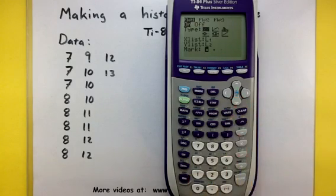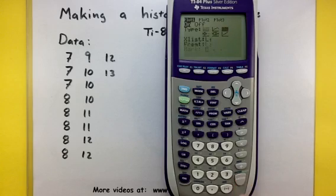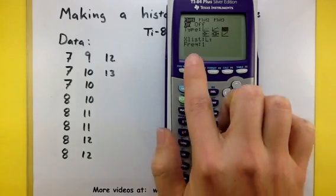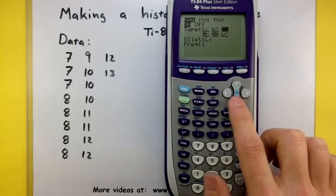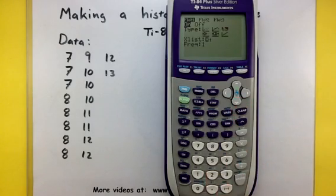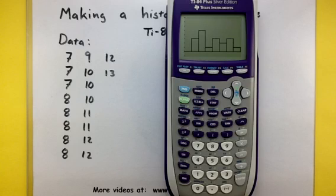Then I'll scroll down and select the type of plot we are going to do. Notice the one on the end with all those little bars? That's our histogram, so let's select that and press ENTER. The calculator wants to know where is all this data to build the histogram. I can scroll down one more and see that L1 is already selected. Alright, things are looking pretty good. Finally, let's go ahead and press our GRAPH button and take a look at our histogram.